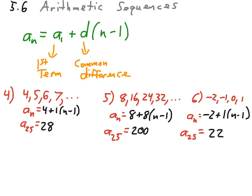So, our sequences generate as follows. We have 4 plus 1 times n minus 1, with our a sub 25 being 28. Number 5, we have 8 plus 8 times n minus 1, with our 25th term being 200. And number 6, our a sub n is negative 2 plus 1 times n minus 1, with our 25th term being the number 22.